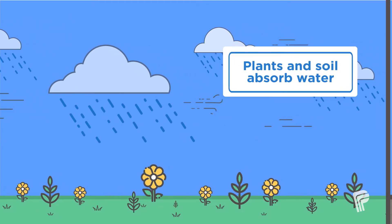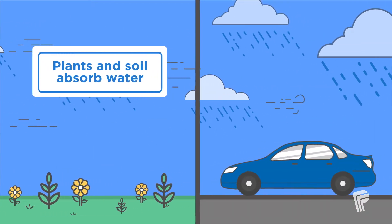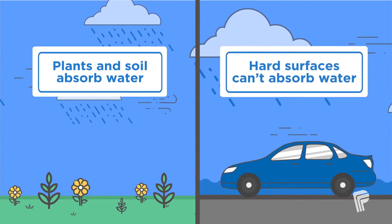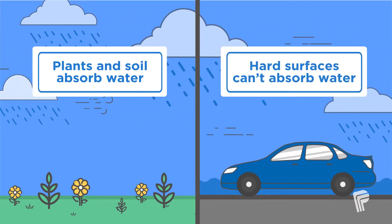It's naturally absorbed by plants and soils, but hard surfaces such as roads, buildings, and parking lots prevent stormwater from being absorbed into the ground.